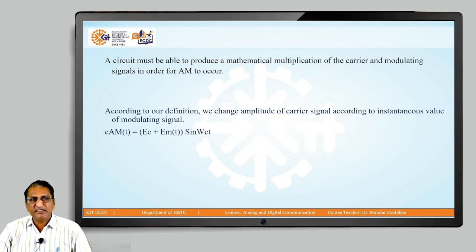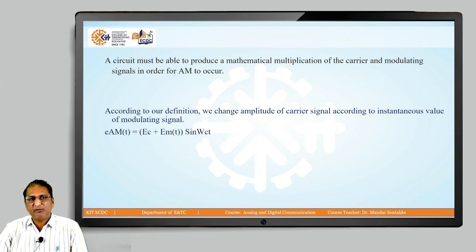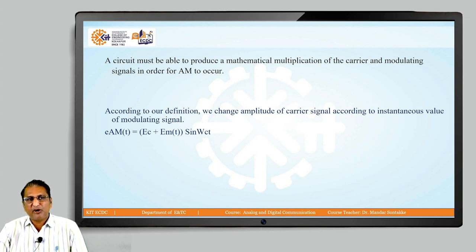In AM, we change the amplitude of the carrier, which is represented by E_c. The AM equation E_AM(t) is formed by replacing E_c with E_c plus the instantaneous value of the modulating signal E_m(t), because the amplitude of the carrier changes according to the instantaneous value of the modulating signal.